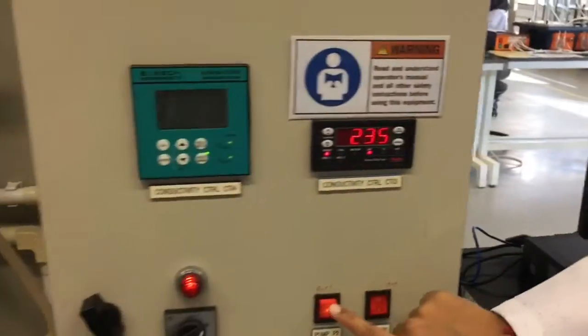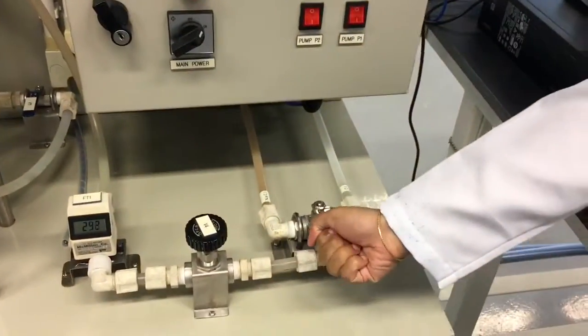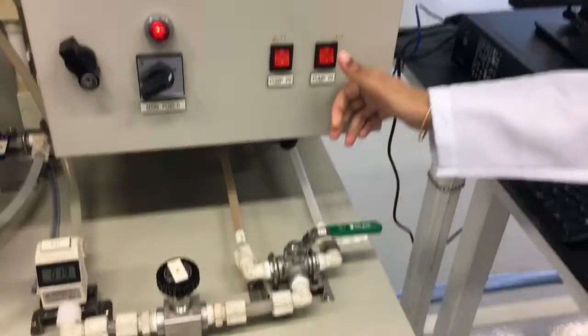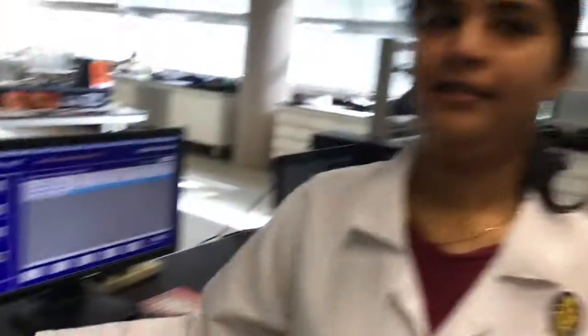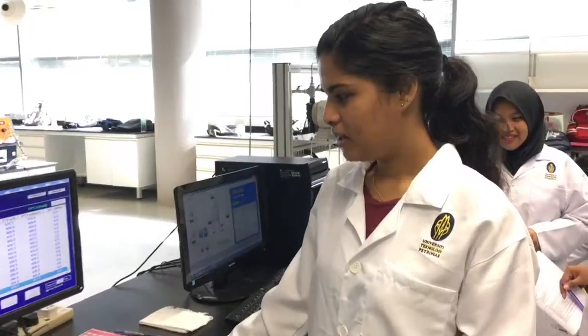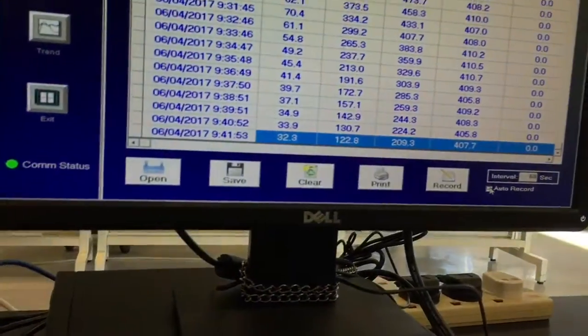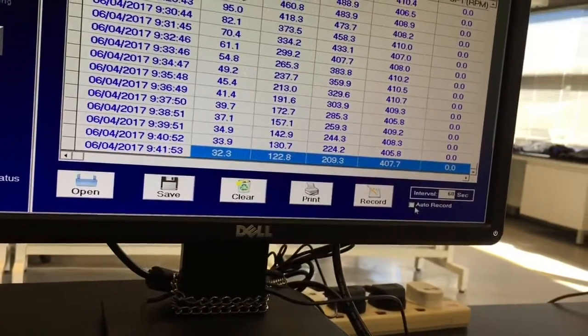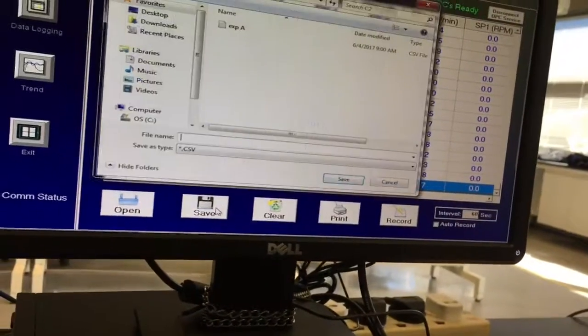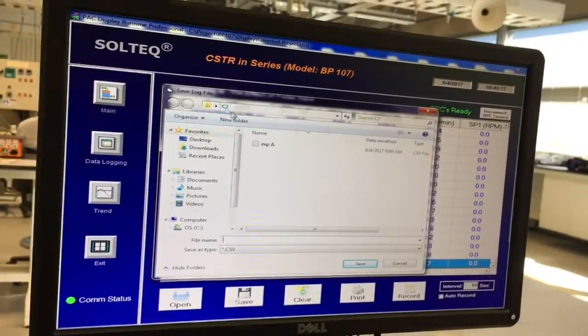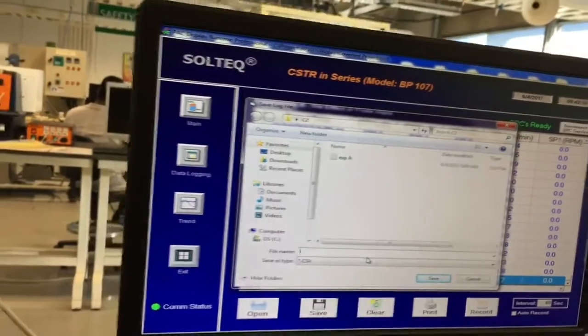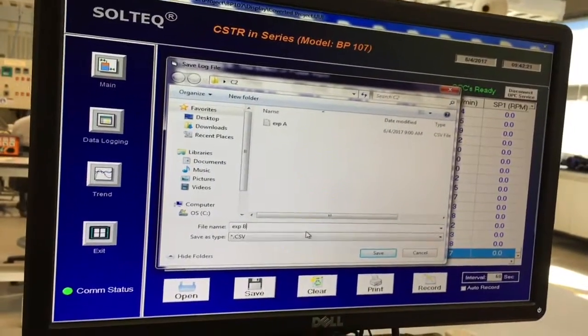After 2 minutes, turn off pump P2, turn the valve, and then turn on pump P1. Now that the reactor has gone steady, we save it into our folder with the name of experiment B.